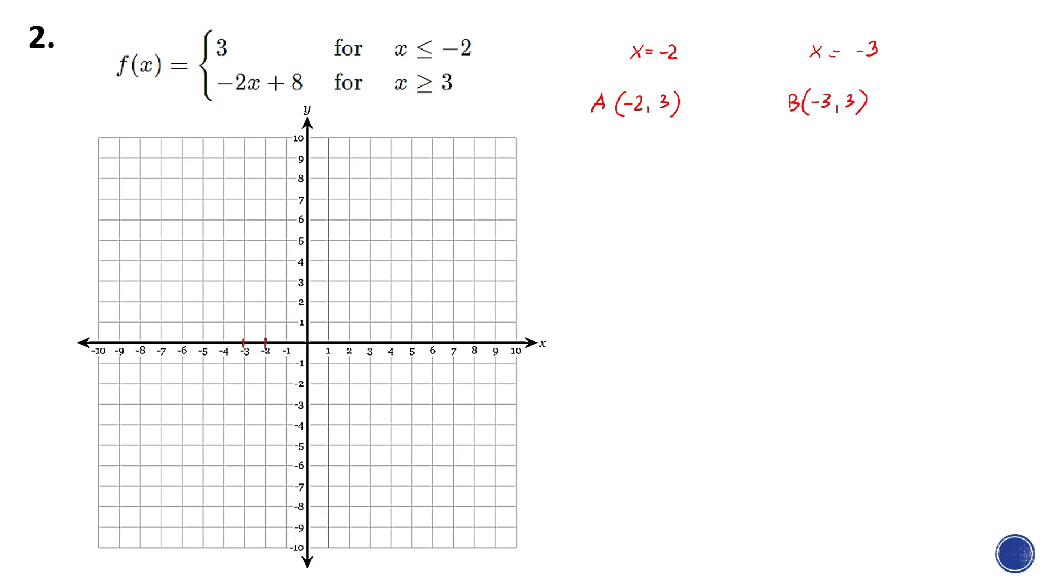Let's find those two points. -2 and 3 is right here, and -3 and 3, which is point B, is right here. By the way, the second point is always shaded.